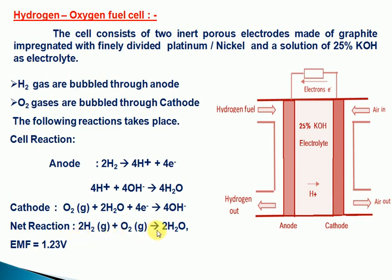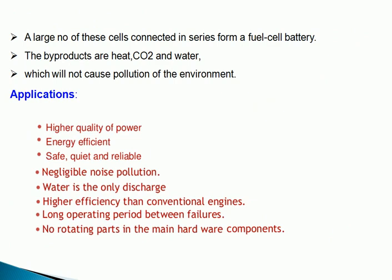The net reaction is: 2H₂ + O₂ → 2H₂O + electrical energy. The hydrogen oxygen fuel cell produces an electromotive force (EMF) of approximately 1.23 volts per cell. A large number of these cells are connected in series to form a fuel cell battery, producing higher voltage.